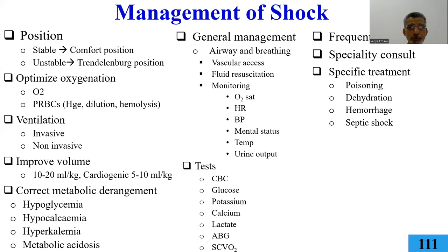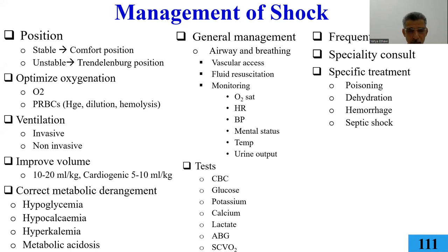Remember to position the patient, ensure oxygenation and ventilation, and prime the circulation. Assess circulation using heart rate variability and lung ultrasound: more A-lines mean more air and less volume — if there is hypotension with more A-lines, give volume. If there are more B-lines (comet-tail artifacts), that indicates fluid — cardiogenic shock — and you need diuretics. Correct metabolic derangements in sick babies: hypoglycemia, hypocalcemia, and metabolic acidosis.